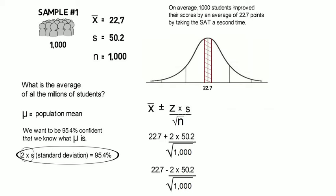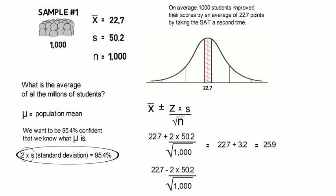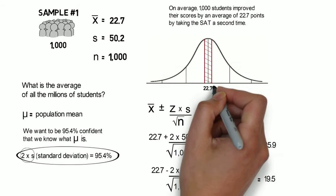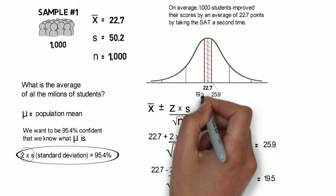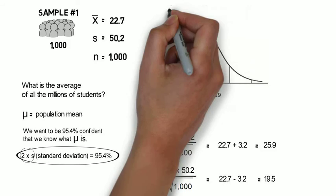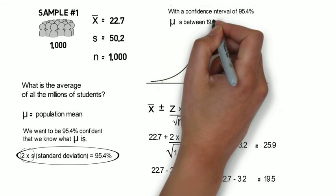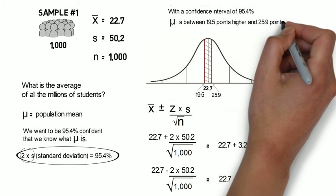So for the first one, it's 22.7 plus 3.2. It gives us an upper bound of 25.9. And on the second one, we subtract 3.2 and get a lower bound of 19.5. That means we've trapped the population mean between these numbers around our sample mean. And with a confidence of 95.4%, we can say μ is somewhere between these two numbers.